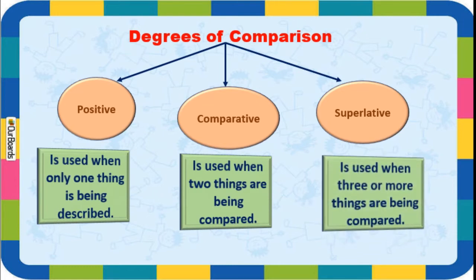The third one is superlative degree. It is used when three or more things are being compared. For example, 'Ram is the tallest boy in the class' - see, tallest, and in the class, all the boys are compared with Ram. Then we use a superlative degree.